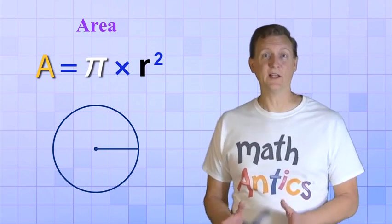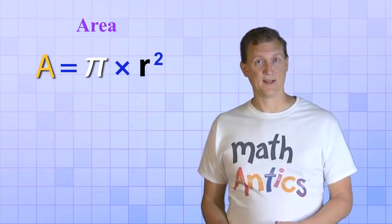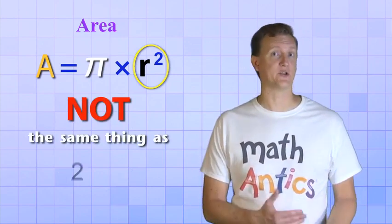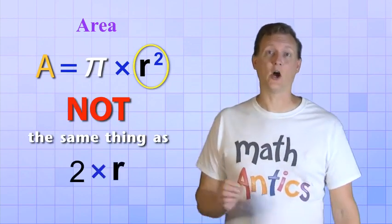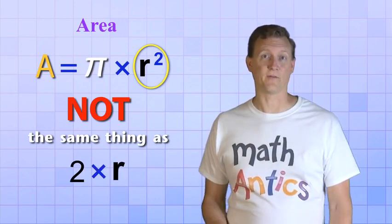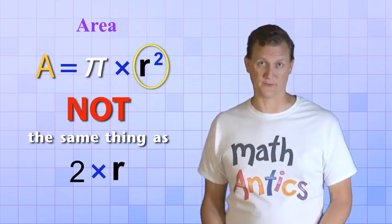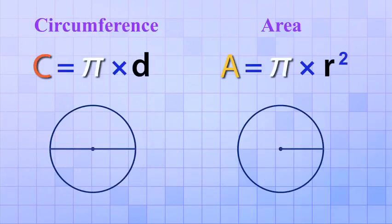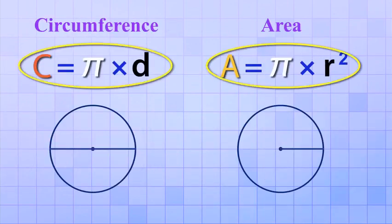Oh, and one really important thing to keep in mind is that r squared is not the same thing as 2 times r. That's a common mistake that students make when first learning how to find the area of a circle. And if we look carefully at both of our formulas, you'll see why. These two formulas have a lot in common.